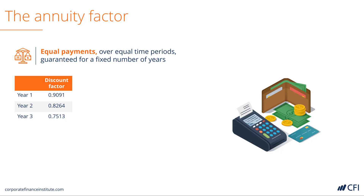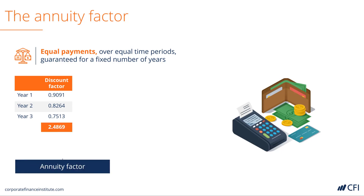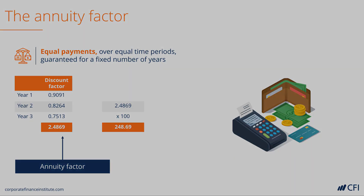If we add the discount factors we get what is known as the annuity factor — in this case 2.486. This is very useful as it provides a shortcut to calculate the present value of an annuity. Notice if we multiply our annuity payment of $100 by the annuity factor, we get the same answer as before: $248.69. We can also use annuity tables to work out our annuity factor to save even more time.